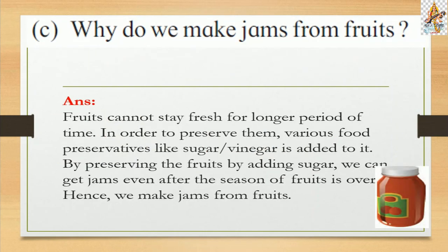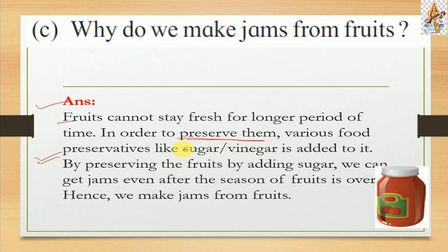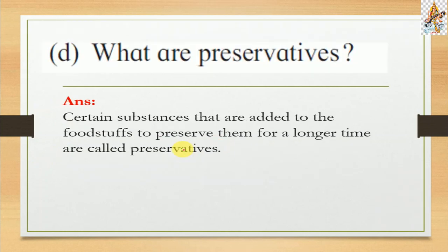Question c: Why do we make jam from fruits? The answer is: fruits cannot stay fresh for a longer period of time. In order to preserve them, various food preservatives like sugar and vinegar are added. By preserving fruits with sugar we can get jam even after the season of fruits is over. Question d: What are preservatives? The answer is: certain substances that are added to foodstuffs to preserve them for a longer time are called preservatives.